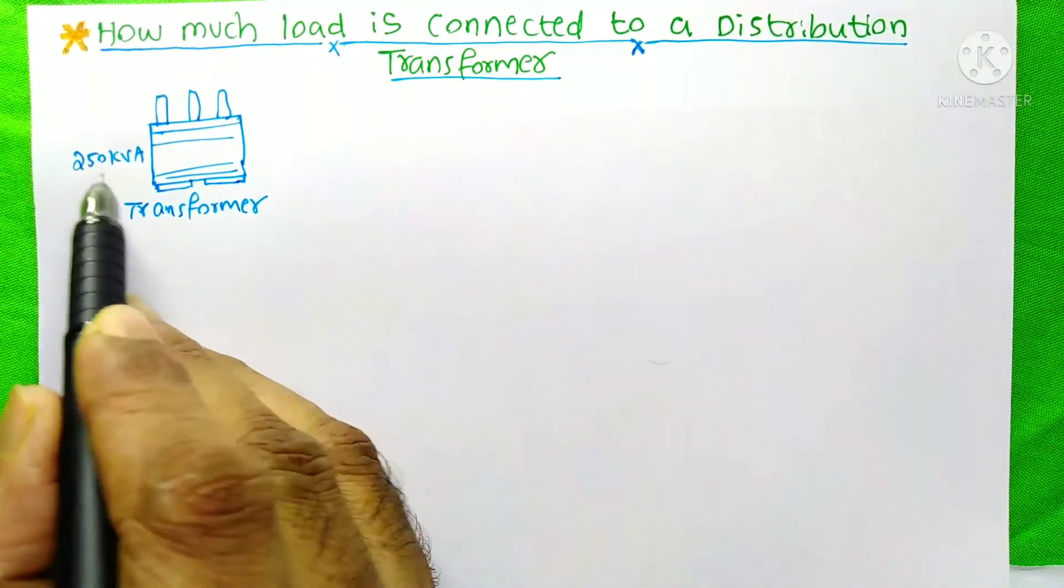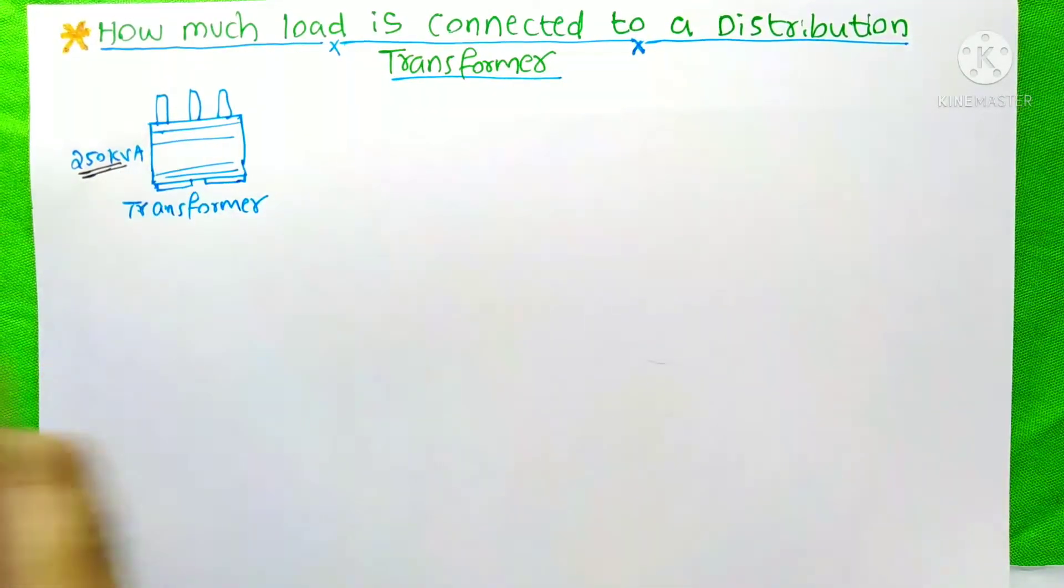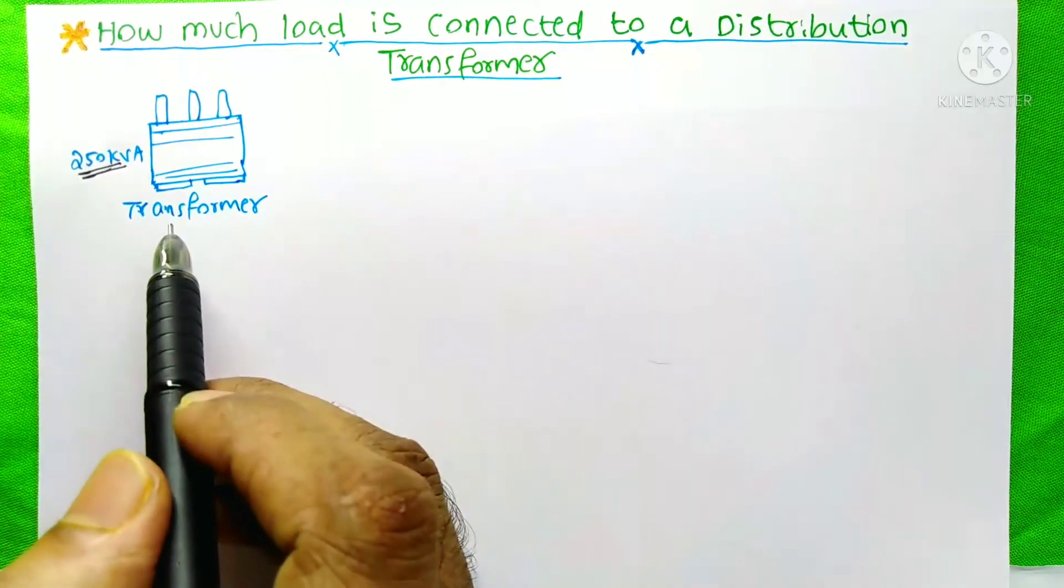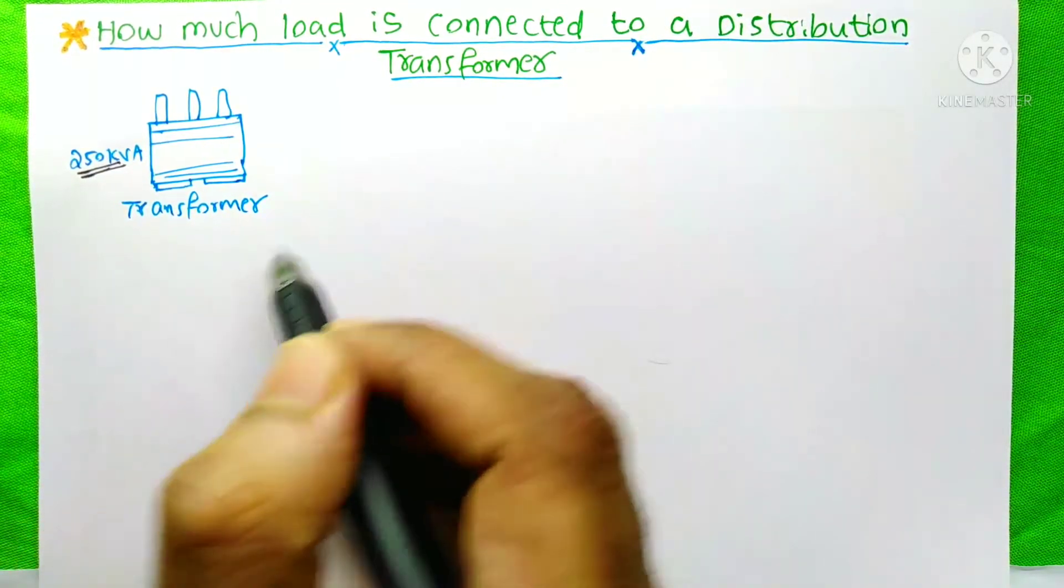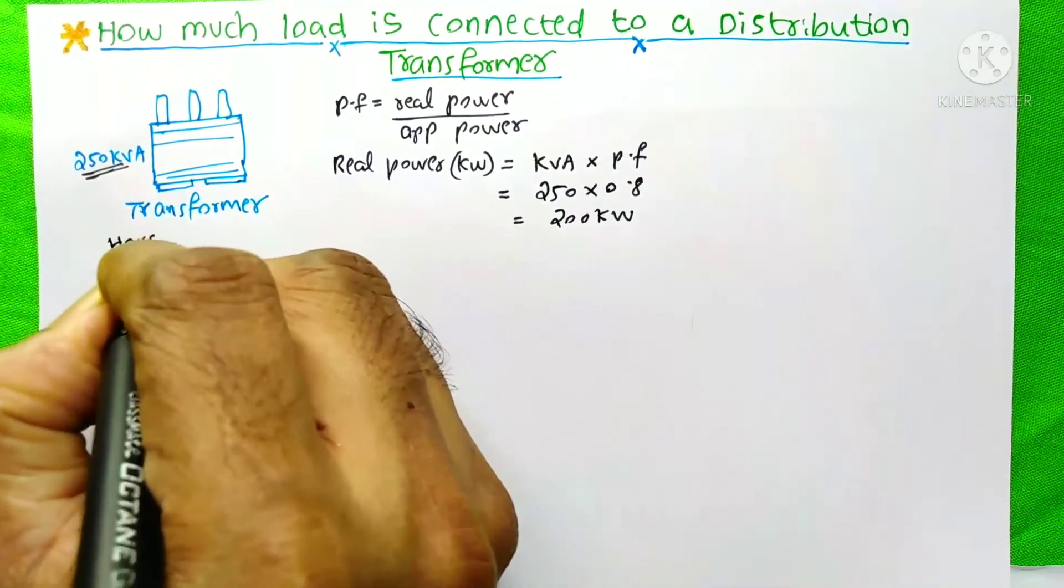Here is the distribution transformer. It is 250 kVA. I am going to calculate how much load can I connect to this transformer for house loads.